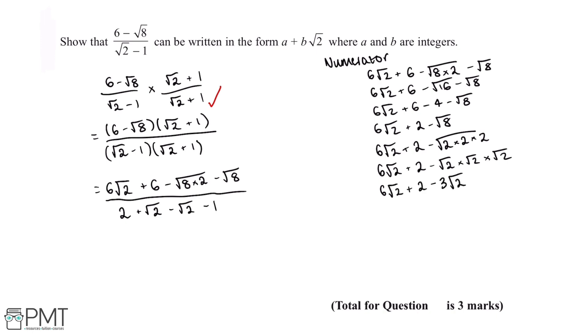And now what we can do is minus 2√2 from 6√2, and this gives us 4√2 + 2.